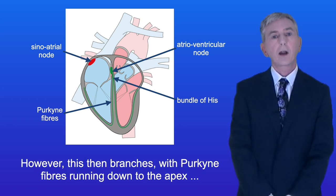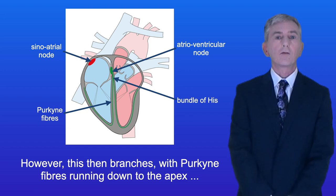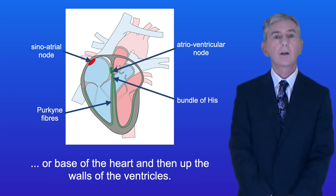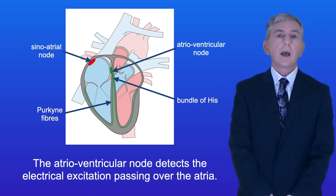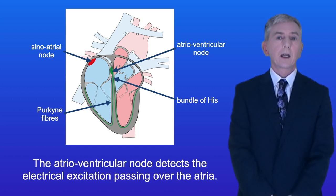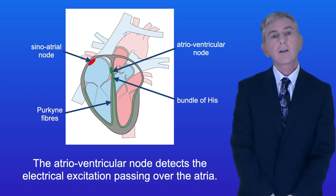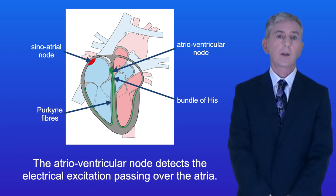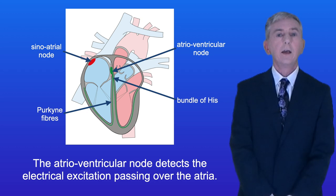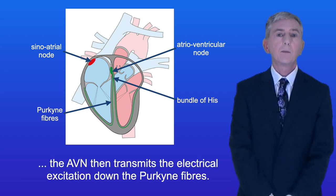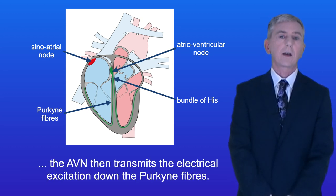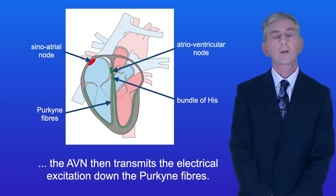The bundle of His then branches with Purkinje fibers running down to the apex or base of the heart and then up the walls of the ventricles. The atrioventricular node detects the electrical excitation passing over the atria and after a short delay the AVN then transmits the electrical excitation down the Purkinje fibers.